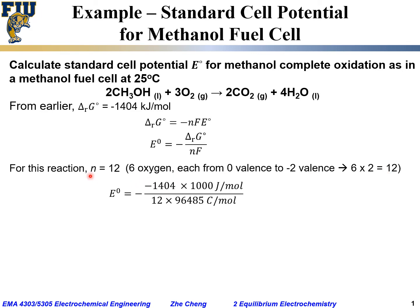So n equals 12 here. With this information, E° equals minus ΔG°, which is minus 1404 kilojoules per mole — times 1000 joules per kilojoule — divided by n, which is 12, and F, which is 96485 coulombs per mole. The mole cancels, and joules divided by coulombs gives us volts; the two negatives cancel.